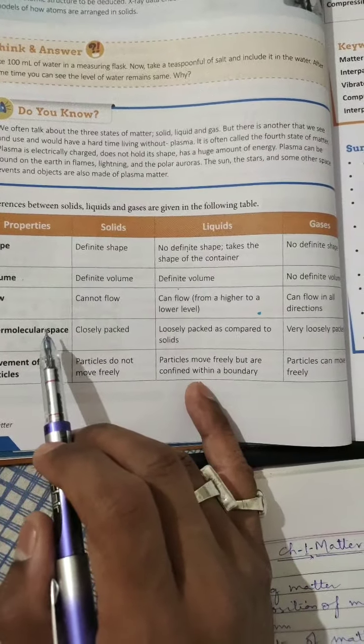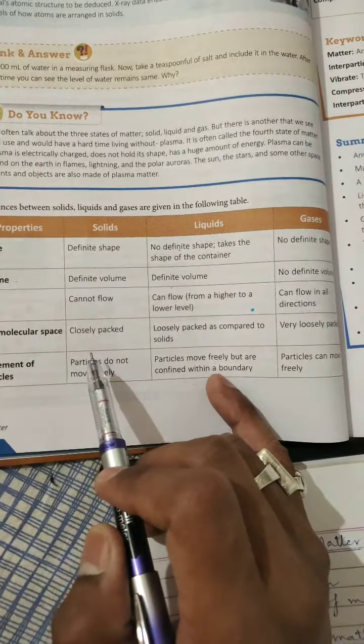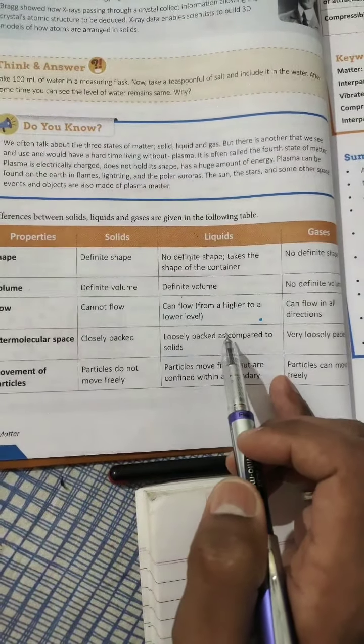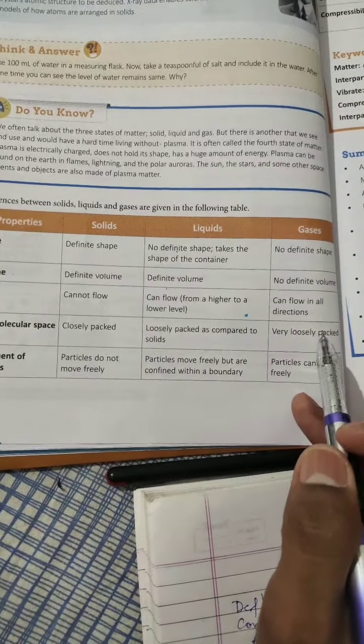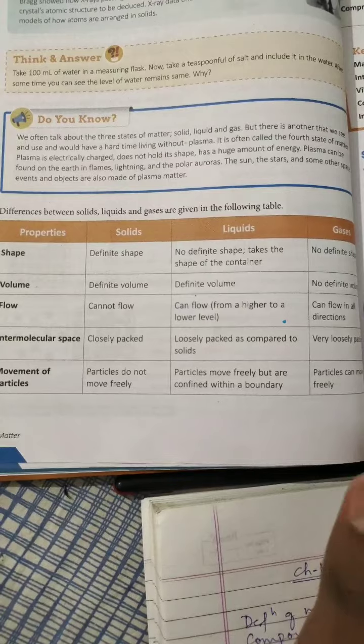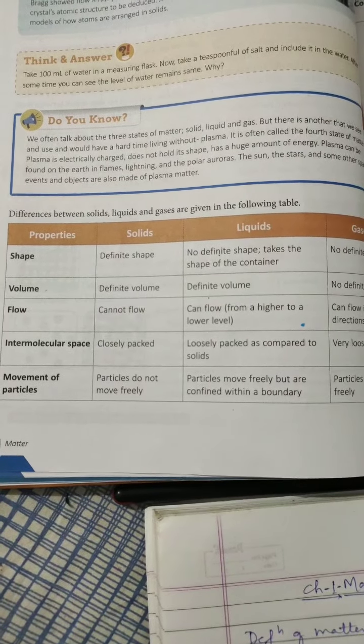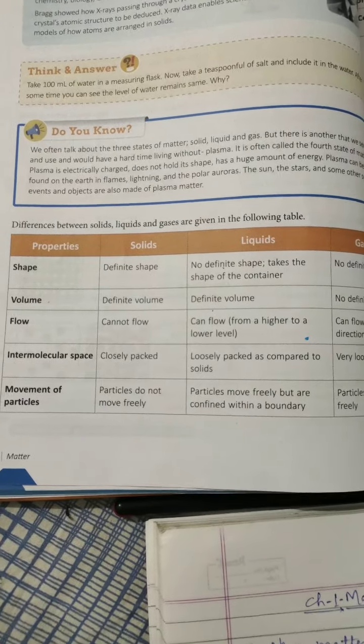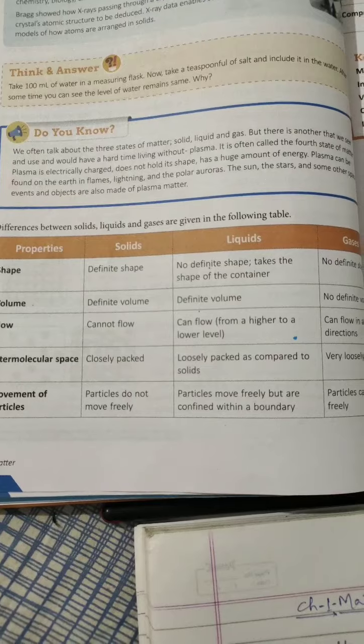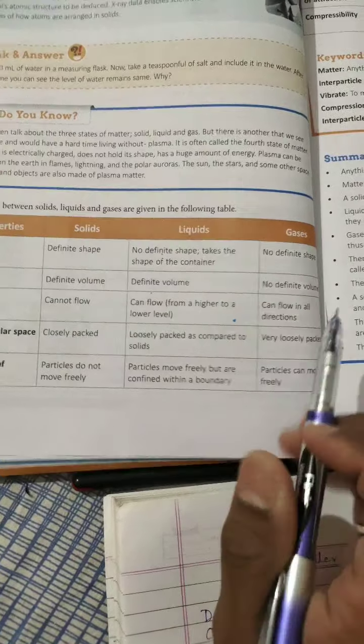Intermolecular space: as we have studied, solid particles are closely packed, that's why intermolecular space is less. Loosely packed means there are some spaces in liquids. Very loosely packed means there are so many spaces between the molecules of the gases. Movement of particles: the particles of solid, due to the less intermolecular space, do not move from their mean position. Liquid particles can move freely within a confined boundary. Gaseous particles can move freely.